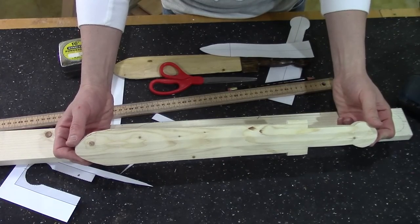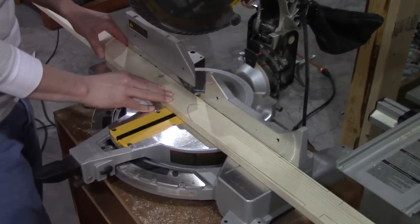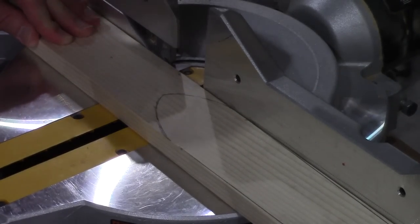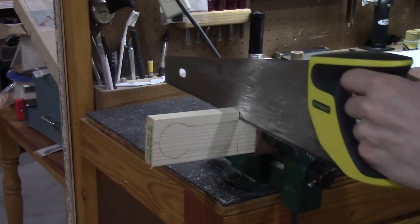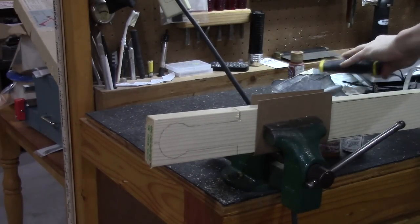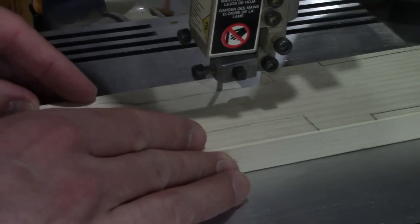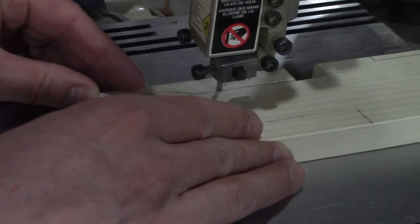Now we're going to cut it out and it should look something like this when we're done. If all you have is a coping saw it'll still work fine. You might want to secure it in a vise if you have one. But a band saw is much better. So if you have one or know somebody who will let you use theirs, go for it.